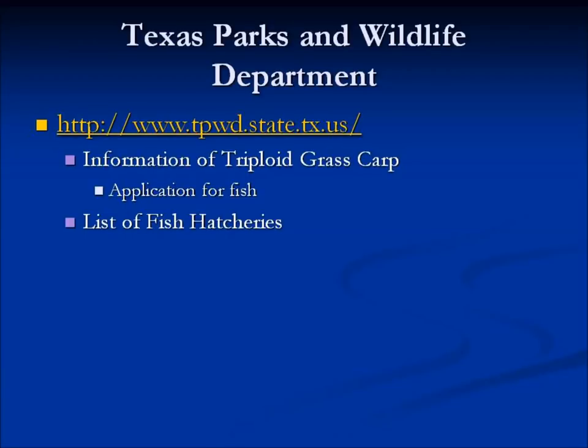The Texas Parks and Wildlife website has information on the triploid grass carp, including the application and a list of fish hatcheries in Texas and neighboring states. Many of those hatcheries will provide triploid grass carp or the other fish species discussed in today's presentation.